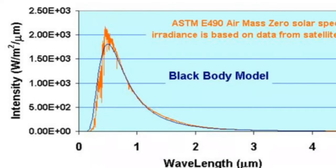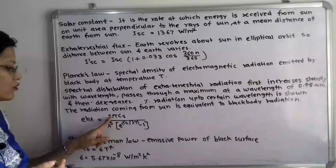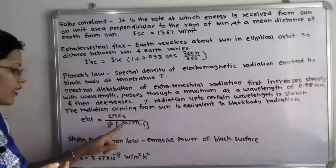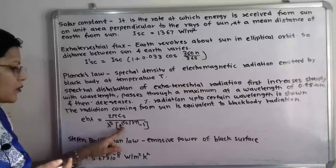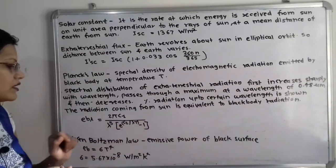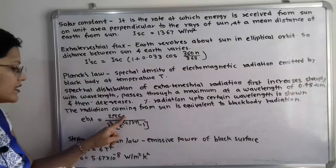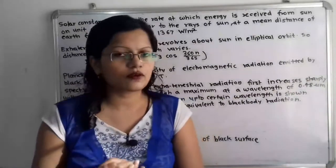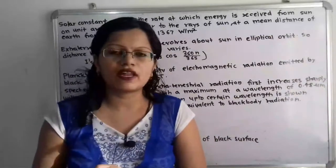Planck's law gives us the formula: e_bλ = 2πc₁ divided by λ⁵ × (exponential of c₂/λT − 1), where c₁ and c₂ are constants with known values.